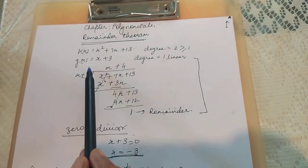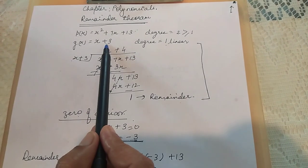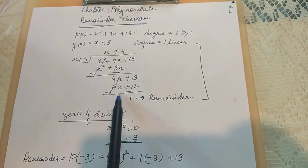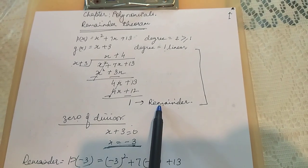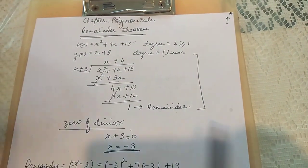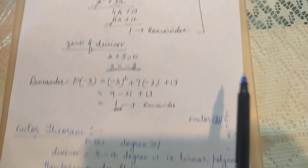So now if it is divided by a linear polynomial say x + 3, this is the way we go for the long division and the remainder comes out to be 1. So instead of going for long division we have a method given by the remainder theorem.